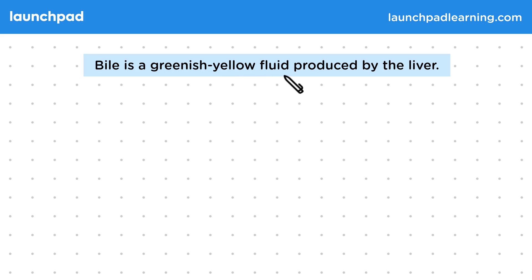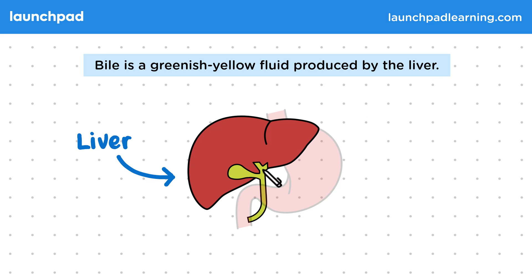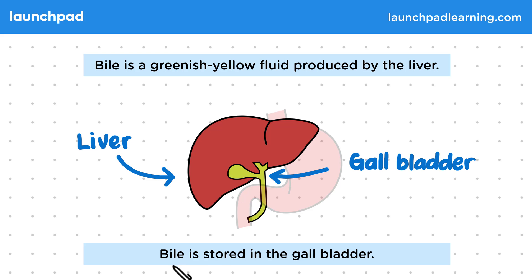Bile is a greenish yellow fluid produced by the liver. The liver is this organ just here. On this diagram you can see this yellow structure just underneath the liver — this is the gallbladder. Bile is stored in the gallbladder.